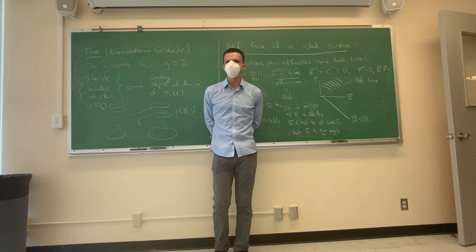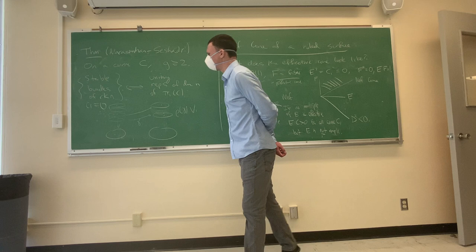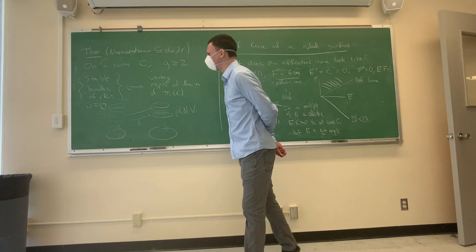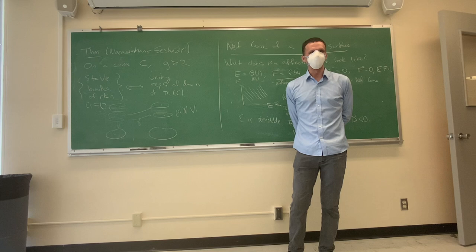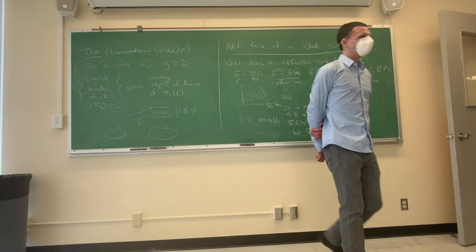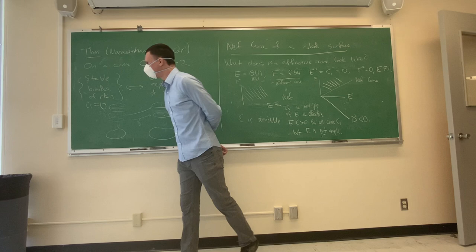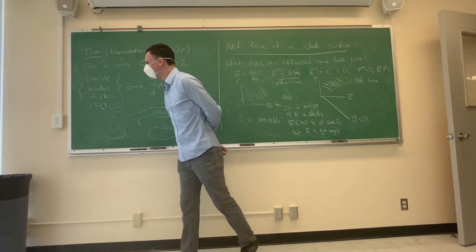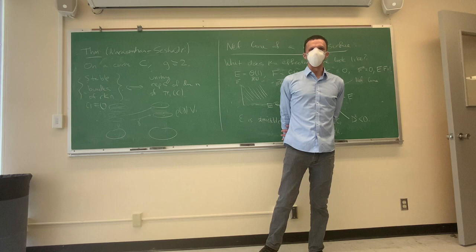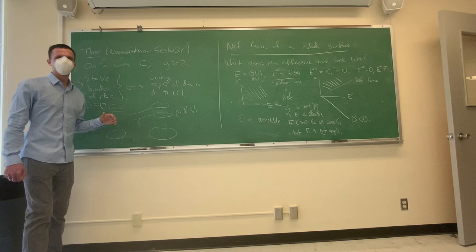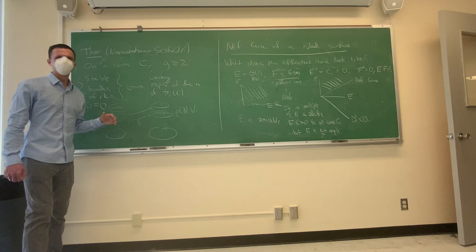If you have a Hermitian metric on the line bundle, that comes with a connection automatically, so it's plausible you get this correspondence. Narasimhan and Seshadri proved this by induction on the rank, saying the rank one case is classical. When n equals one, every bundle is stable because there are no sub-bundles. The line bundles of topological degree zero make up the Jacobian. A one-dimensional unitary representation gives for each generator a point on the circle; pushing through the fundamental group to H₁, with 2g loops, you get a product of 2g circles — exactly what the Jacobian looks like.